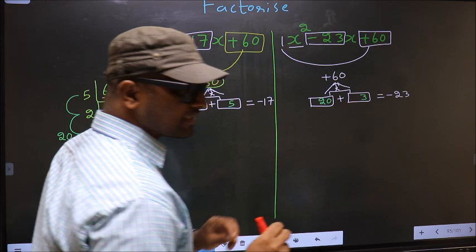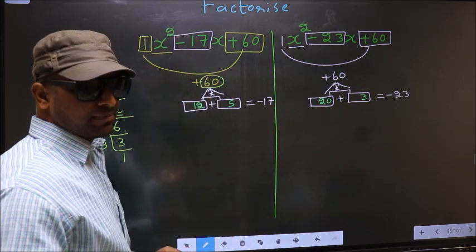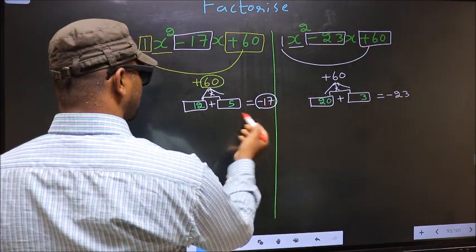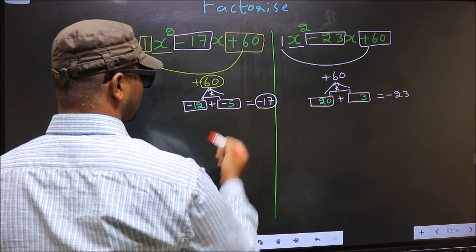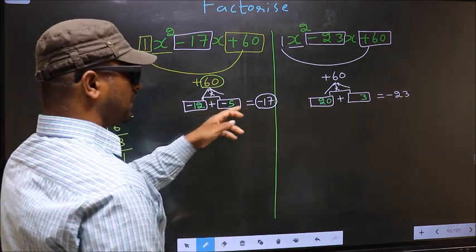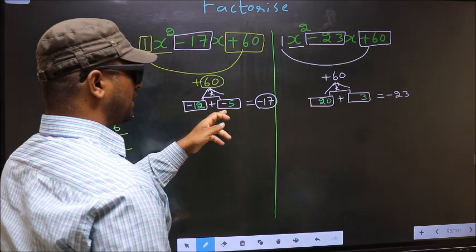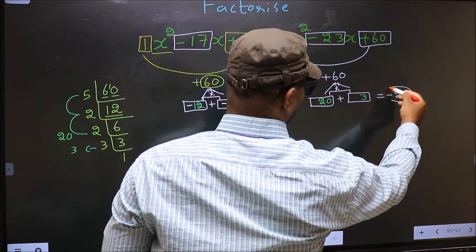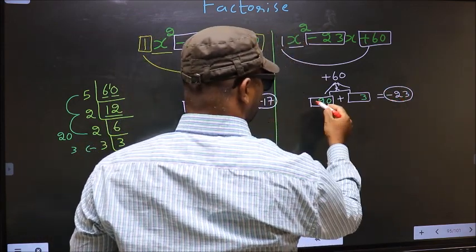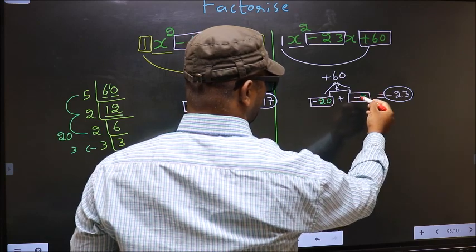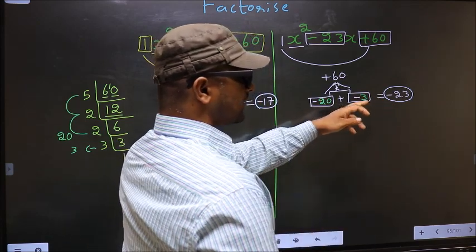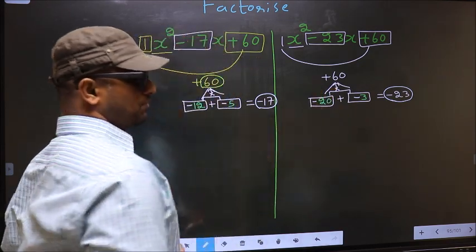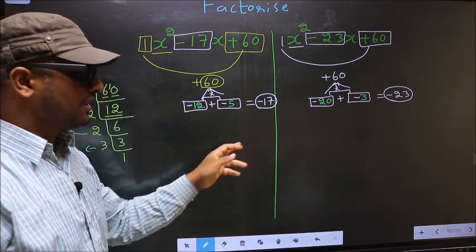Now we should adjust the signs. Over here we have minus 17. To get minus 17 we should place a negative on both numbers: minus 12 minus 5 is minus 17, and minus 12 times minus 5 is plus 60. Now here we should get minus 23, so place a negative on both: minus 20 minus 3 is minus 23, and minus 20 times minus 3 is plus 60. So we have adjusted the signs in both.